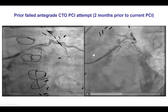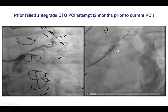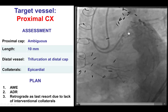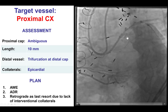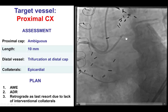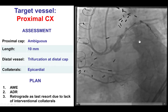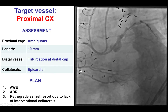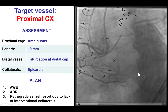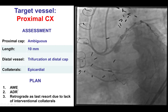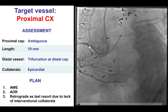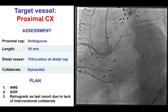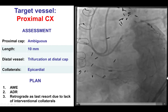The patient did have an attempt for PCI of the circumflex CTO which unfortunately was unsuccessful two months prior. He therefore presented for another attempt for re-canalizing the circumflex. He did have an ambiguous proximal cap with multiple small branches originating close to the left main. The length was short. He did have a bifurcation of the distal cap with a large first obtuse marginal branch originating close to the distal cap, and the collaterals were epicardial and not very good for re-canalization. Therefore, the plan was to do antegrade wire escalation, as a second line attempt antegrade dissection re-entry with a caveat that it might compromise patency of the obtuse marginal branch, and leaving retrograde as a last resort because the collaterals were not of the best quality.